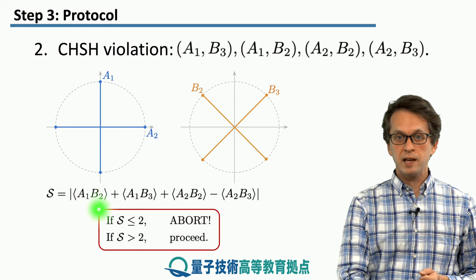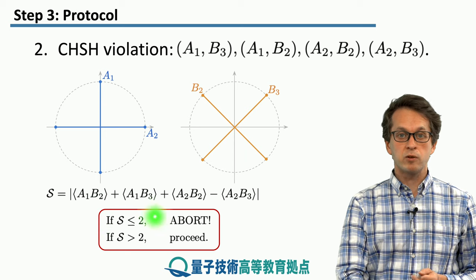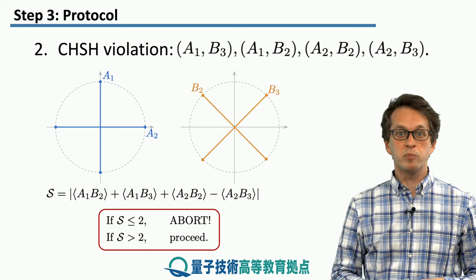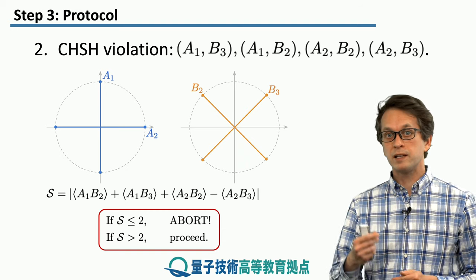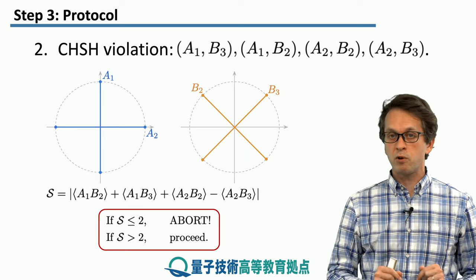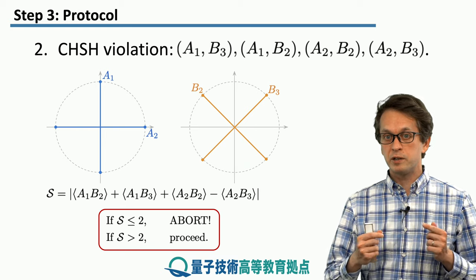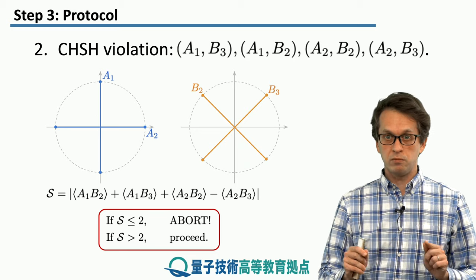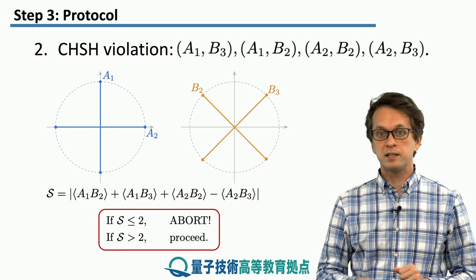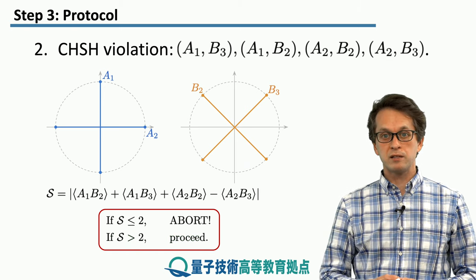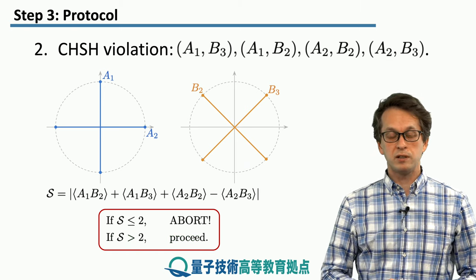If they obtain a CHSH expression of less than or equal to 2, they say they cannot conclude that they have an entangled state and it's safer to abort. Monogamy of entanglement ensures that if they have an entangled state, Eve is not strongly correlated with either of them — and if they have a maximally entangled state, Eve is not correlated with Alice and Bob at all. So they are looking for as strong a violation as possible. If the CHSH expression is larger than 2, they conclude they are sharing an entangled state and can proceed with the protocol.